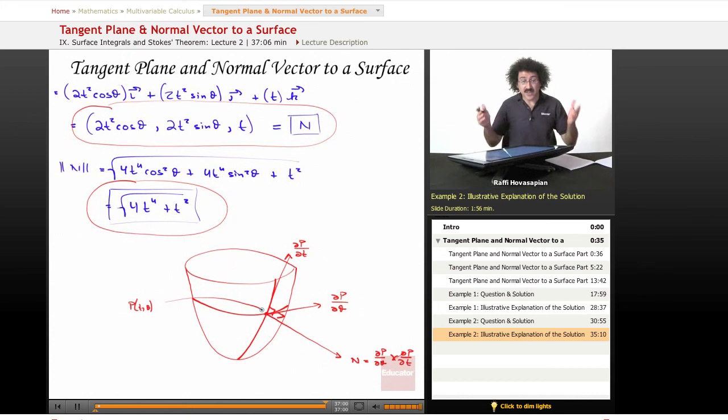So that is tangent plane and normal vector to a surface. Thank you for joining us here at educator.com. We'll see you next time. Bye-bye.